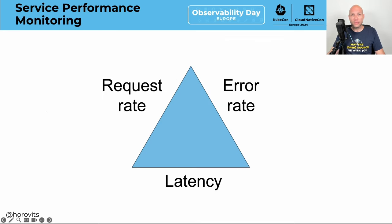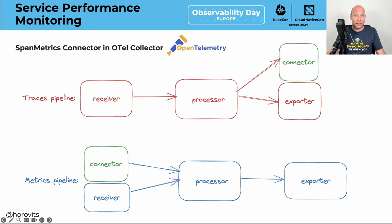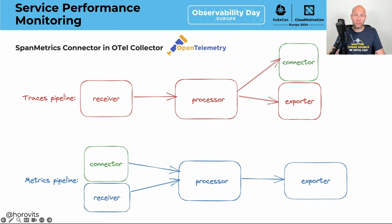Let's start with service performance monitoring. We need to have basic RED metrics on our microservices — request rate, error rate, latency. I'm glad to say that we've done work at the OpenTelemetry Collector to give the ability to calculate these metrics on the fly from spans, from trace data. This is called the span metrics connector in OpenTelemetry.